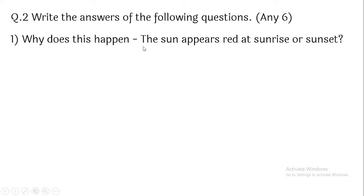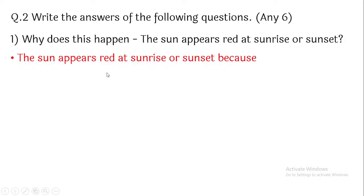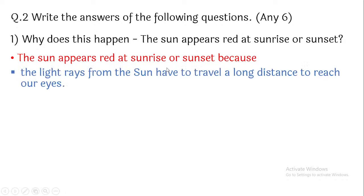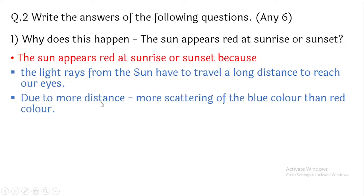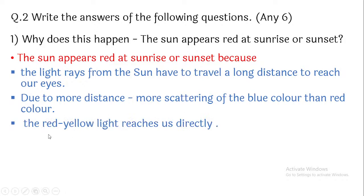Why does this happen — the sun appears red at sunrise? The sun appears red at sunrise or sunset because the light rays from the sun have to travel a long distance to reach our eyes. Due to the greater distance, there is more scattering of blue color than red color. That is why red or yellow light reaches us directly, making the sun appear red at sunrise or sunset.